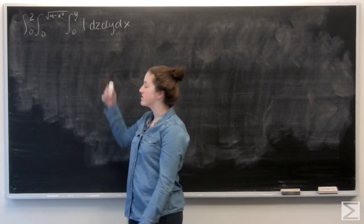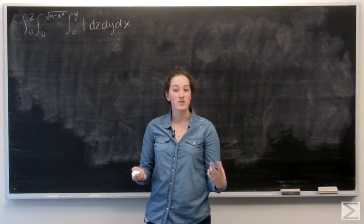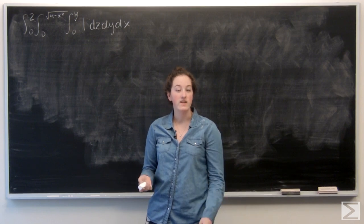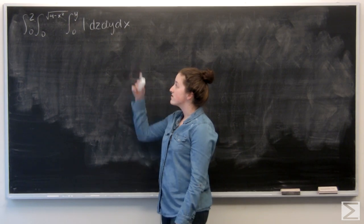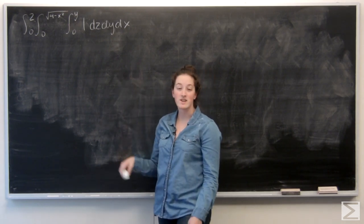So, for this problem we're given an iterated integral, and it's supposed to represent a solid S. And first off, we want to calculate the volume of that solid. The integral is already given to us, we're just integrating dV.